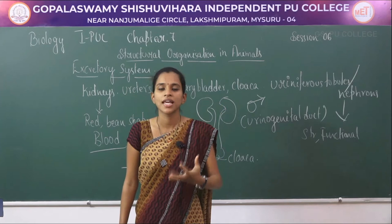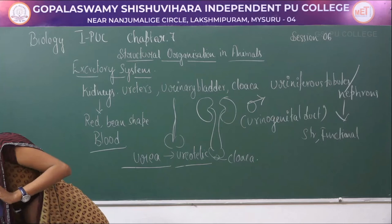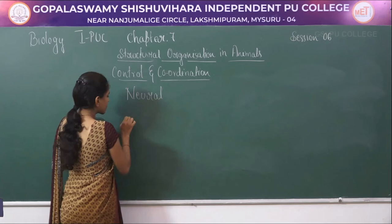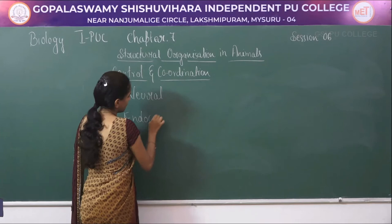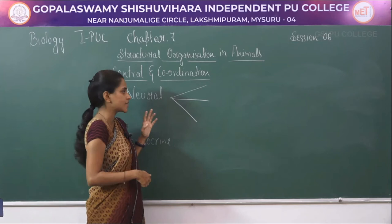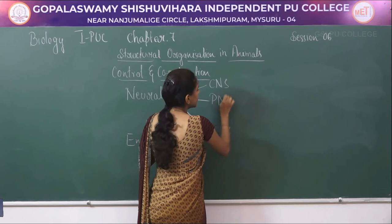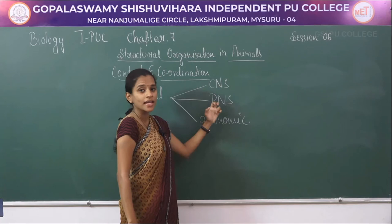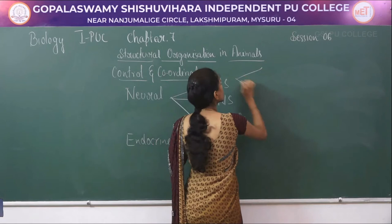Next we will study about coordination, which takes place both chemically and neurally. When it comes to control and coordination, it includes two components: neural coordination and chemical coordination done by endocrine glands. Neural coordination includes different components — the central nervous system, peripheral nervous system, and autonomic nervous system.